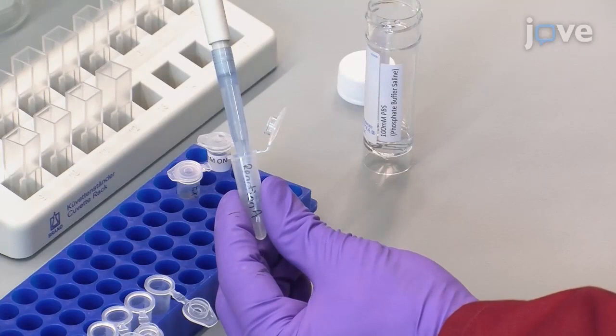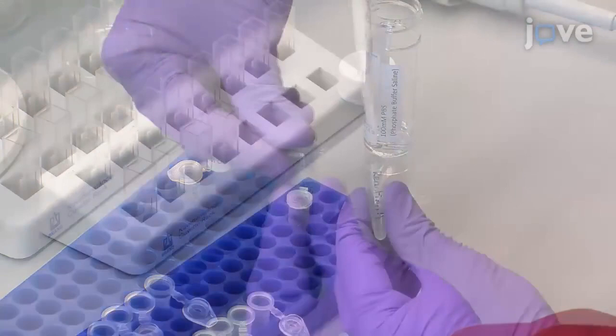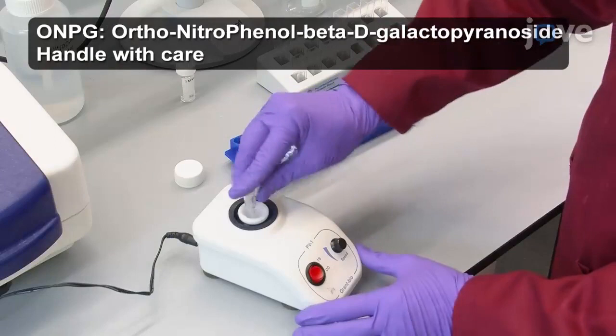Place 390 microliters of 100-millimolar PBS into a 1.5-milliliter tube labeled Reaction A. Then, add 100 microliters of 5-millimolar ONPG solution and mix well by vortexing. Add 10 microliters of extract into the reaction A tube and vortex the contents.